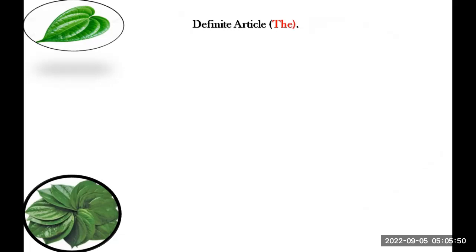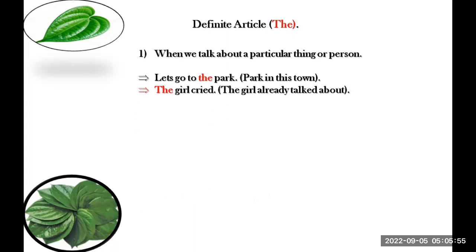The article 'the' is a definite article. I have told you that it represents a particular thing or particular person. For example, 'Let's go to the park.' Here, I'm talking about a particular park — a park which is in our town, in our city. When you are in that situation, you can use article 'the'.